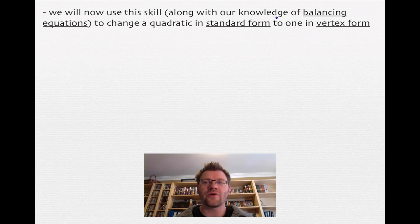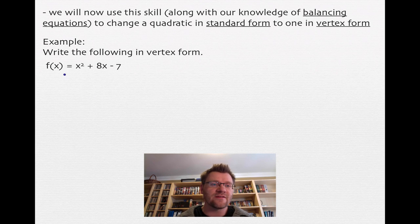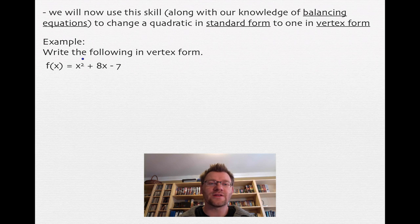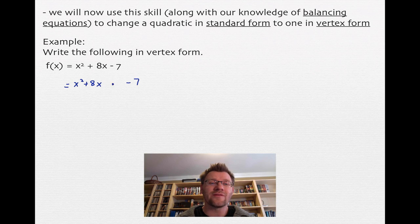Now we'll use this skill, along with our knowledge of balancing equations, to change a quadratic from standard form to vertex form. First example: f of x equals x squared plus 8x minus 7. This is not currently a trinomial square, but we can make it one. Move the negative 7 aside and leave a blank. To make x squared plus 8x a trinomial square: take half of 8 to get 4, and square it to get 16.